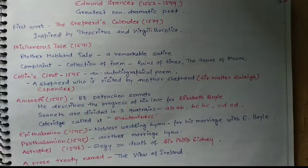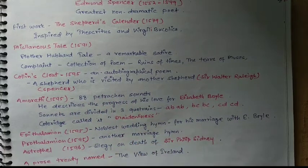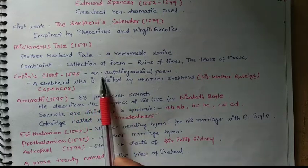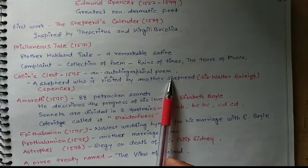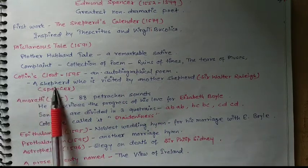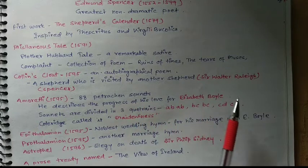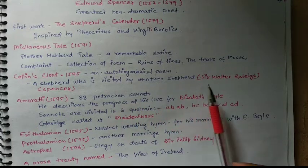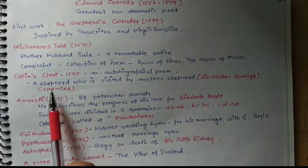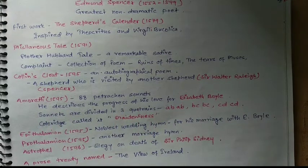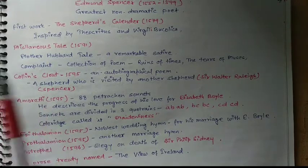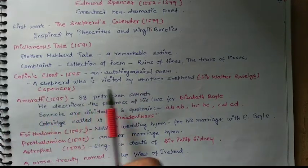The next work is Colin Clouts Come Home Again, published in 1595. It is an autobiographical poem in which a shepherd is visited by another shepherd — the visiting shepherd represents Sir Walter Raleigh, and the first shepherd represents Spenser himself. Any poem featuring a shepherd is called a pastoral poem.